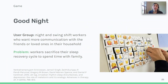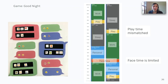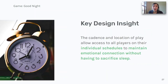Good Night targeted users such as night shift or swing shift workers who want more communication with friends or loved ones in their household. Good Night offers a means of asynchronous communication to build family bond. Household members on different schedules create and respond to coded messages throughout their day. The refrigerator acts as the magnetic message board, centrally located in the household. In the image at right, you can see parallel schedules, which show that the red band, or FaceTime, between individuals in the household is limited. A game round ends when players gather in person and explain their messages. One key insight from Good Night was that the cadence and location of play allow access to all players on their individual schedules to maintain emotional connection without having to sacrifice sleep.